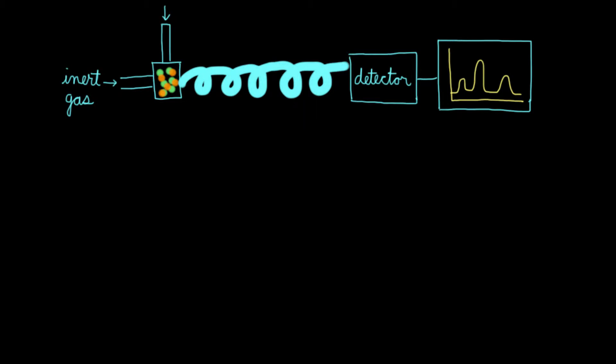So to recap, we injected our liquid sample, which was vaporized into gas. Then it joined up with the stream of inert gas that was already flowing and was pushed onto the long column.